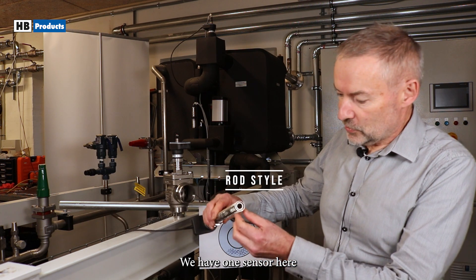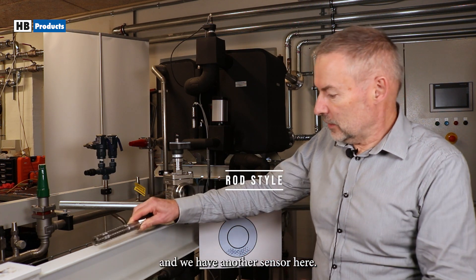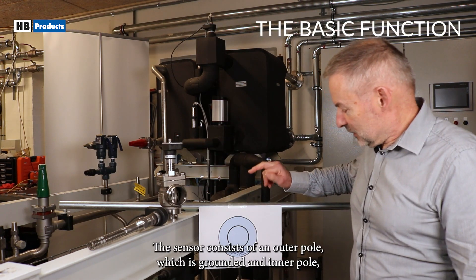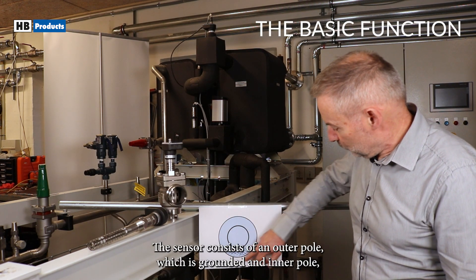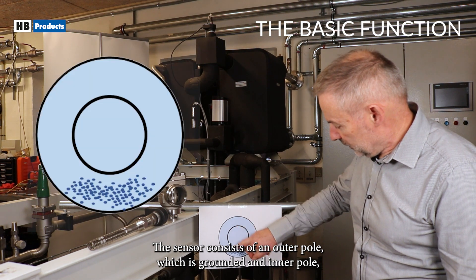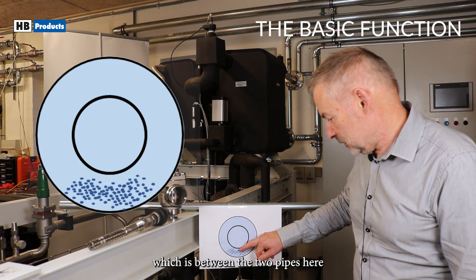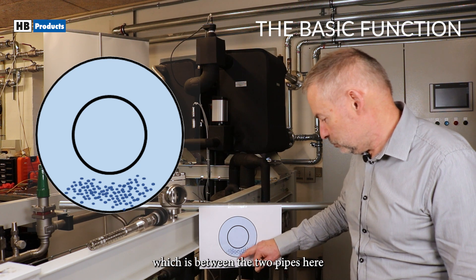We have one sensor here and we have another sensor here. The sensor consists of an outer pole which is grounded and an inner pole, and the sensor detects liquid which is between the two pipes here.